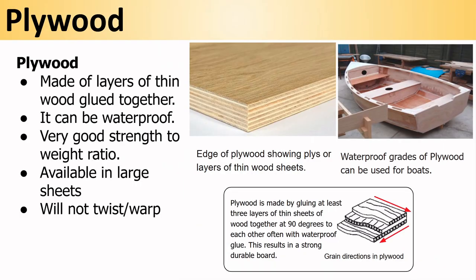Plywood is made from layers of thin wood glued together. It can be waterproof, has a good strength to weight ratio, is available in large sheets, and will not twist or warp. The plies have grain going alternately at 90 degrees to each other, which — often with waterproof glue — makes plywood very strong and warp-resistant. A waterproof grade of plywood can be used for things like boats.